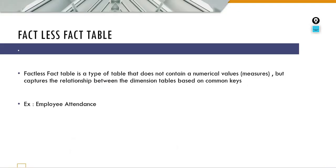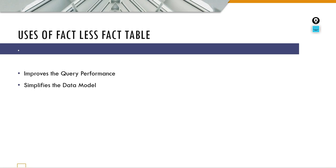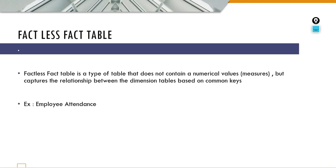So a factless fact table will not contain any numerical values — for example, employee ID or student ID. It improves query performance and simplifies data model complexity. This is all about the factless fact table as a data warehousing concept. Thank you for watching the video.